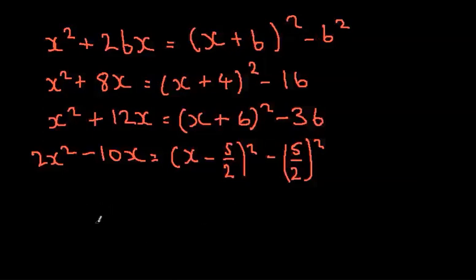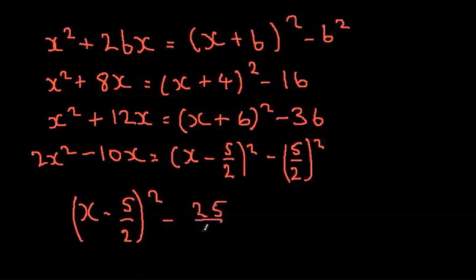This simply becomes x minus 5 over 2 squared, minus 5 squared which is 25 over 2. That's your answer. That's pretty much completing the square.